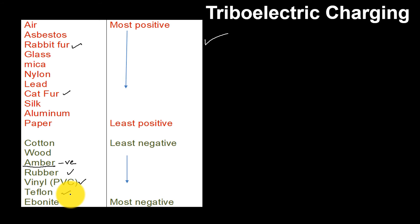In general, when two materials in this table are rubbed together, the one higher in the list becomes positively charged and the one lower in the list becomes negatively charged. The greater the separation on the list, the greater the magnitude of the charge.